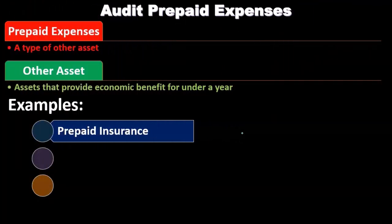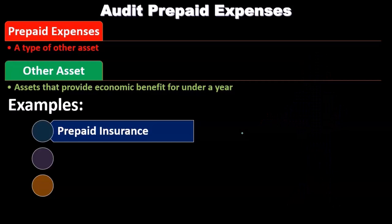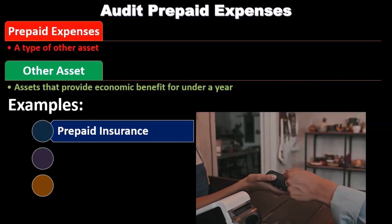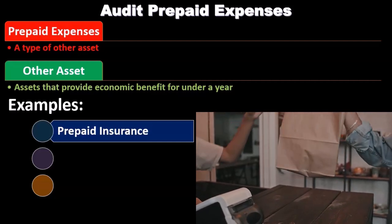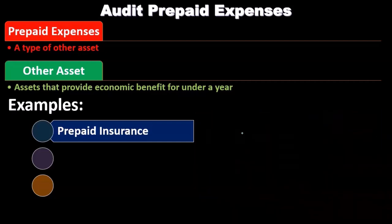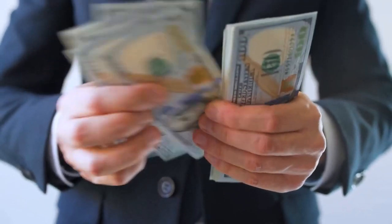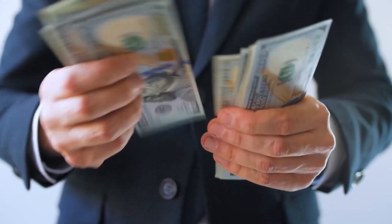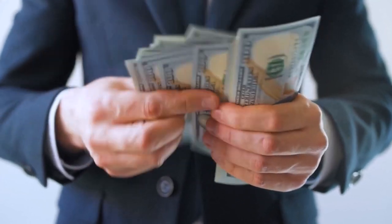Why? Because it's typically cheaper to do that rather than pay on a month-to-month basis. We need to consider the prepaid insurance in that case. We can have prepaid types of any items where we pay for the item before we actually receive it — a little unusual, because typically you would think we'd pay at the point in time we receive goods or services, or possibly after. In this case we're paying before we receive the goods or services.